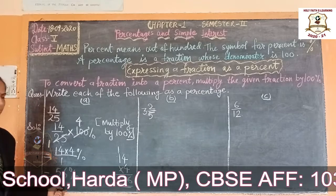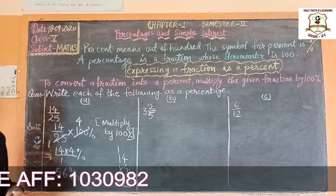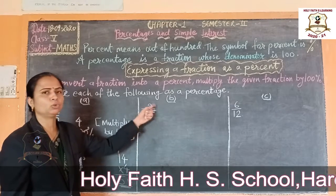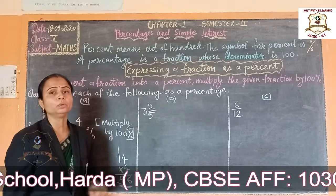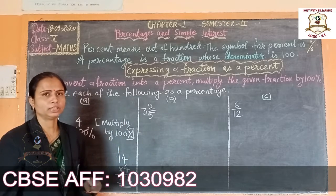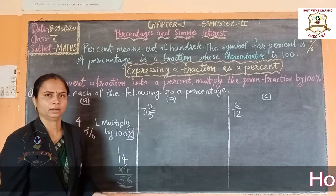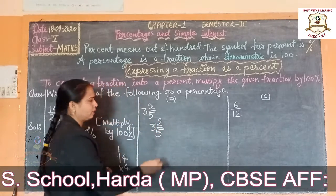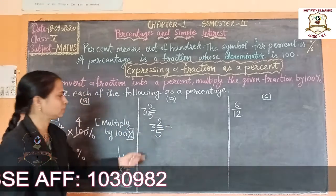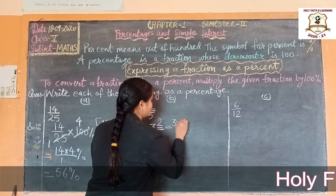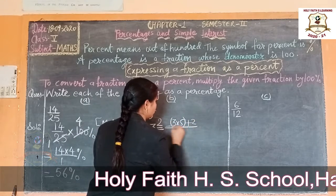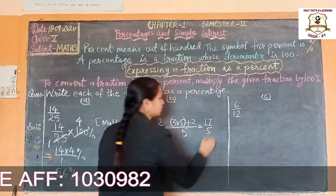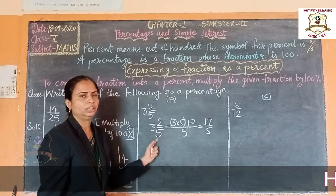Now solve the next example. This is a mixed fraction: 3 and 2 upon 5. We have to convert this fraction into percentage, so we multiply this fraction by 100 percent. First convert it into an improper fraction. Multiply 3 into 5 — 3 fives are 15 — then plus 2 upon 5: 15 plus 2 is 17 upon 5.